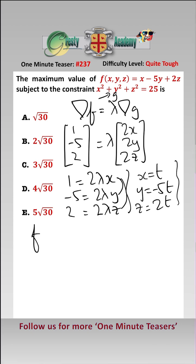Now we can plug these values into f. It gives us t minus 5 times minus 5t plus 2 times 2t, which is 30t.